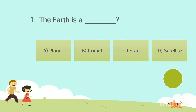Question number 1. The Earth is a dash. Option A: Planet. Option B: Comet. Option C: Star. Option D: Satellite. Your time starts now.